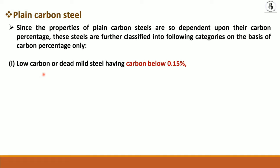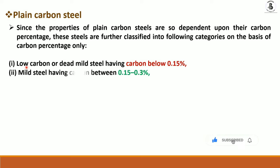First is low carbon or dead mild steel, which has less than 0.15% carbon. With such a low carbon percentage, it is difficult to perform quenching operations to harden this material. Such materials are always softer than other steels.